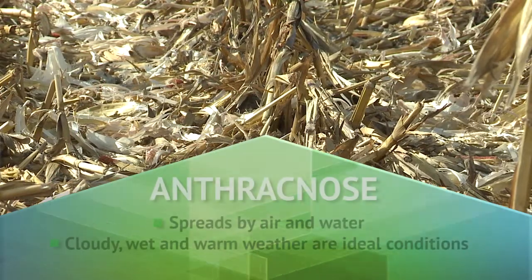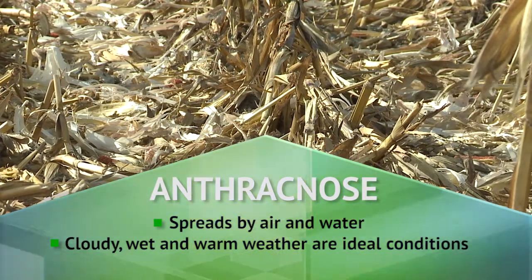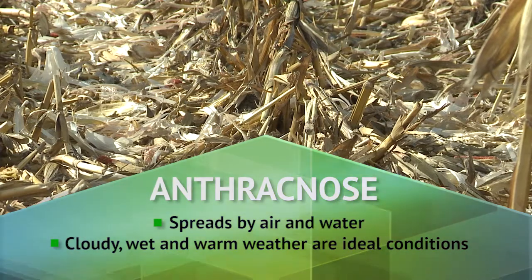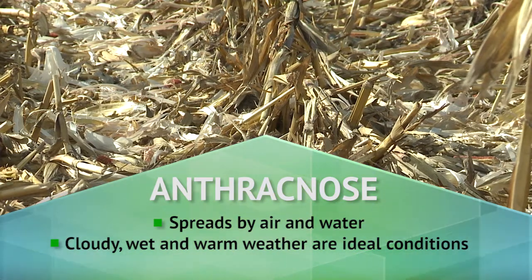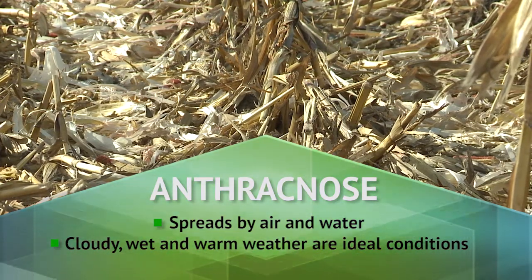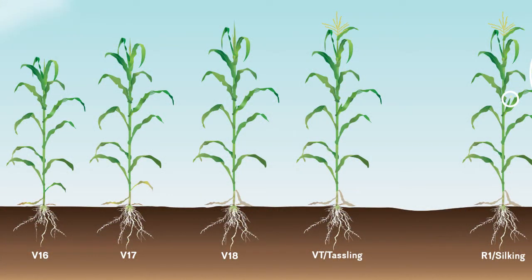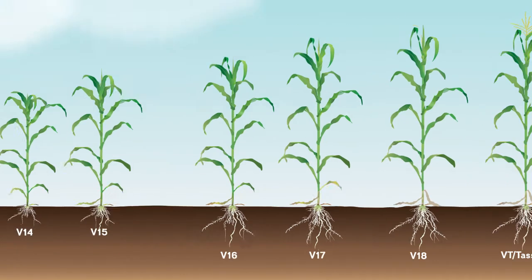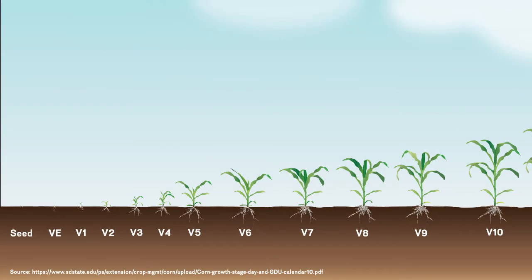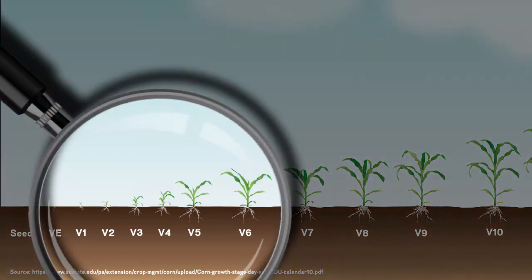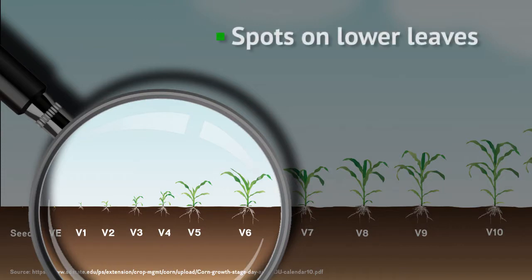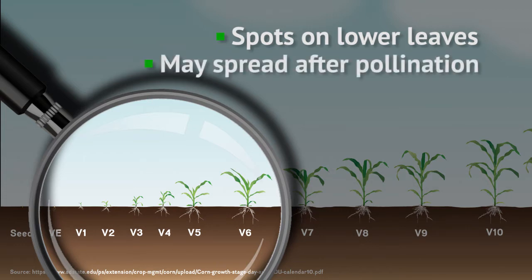Similar to many crop diseases, corn anthracnose primarily overwinters in crop residue left in the field from the previous season. It is most typically seen in no-till and reduced tillage farming systems. Anthracnose can attack corn at various stages of growth. It first appears as leaf blight, usually occurring up through V6, showing up on lower leaves as uneven water-soaked round spots. Late-season anthracnose blight symptoms may spread to upper corn leaves following pollination.